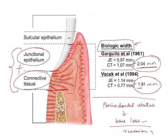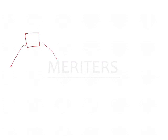This leads to failure of restoration, prosthetic failure, and periodontal failure. Now, consider this diagram: this is a tooth in the socket, this is your alveolar bone, and this is your gingiva.